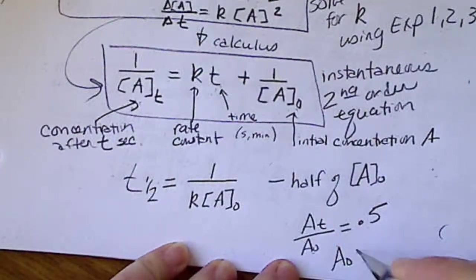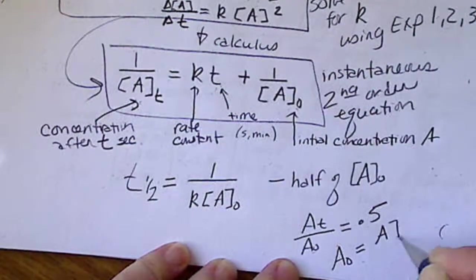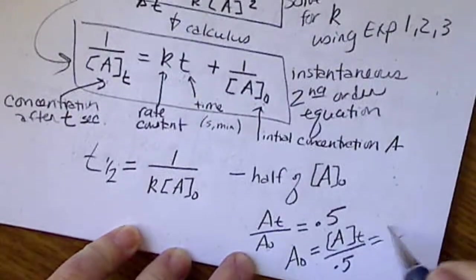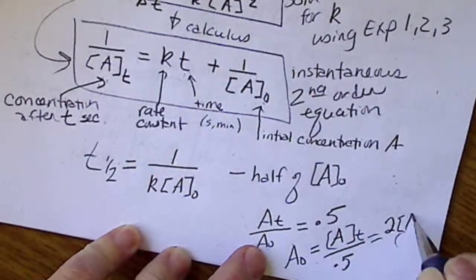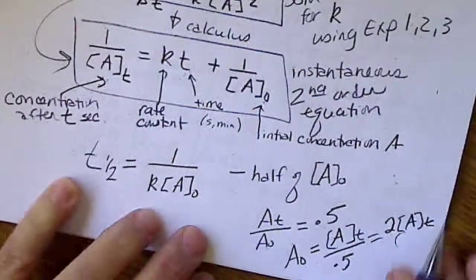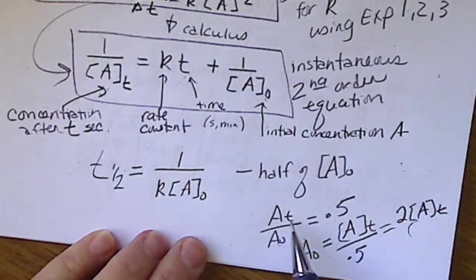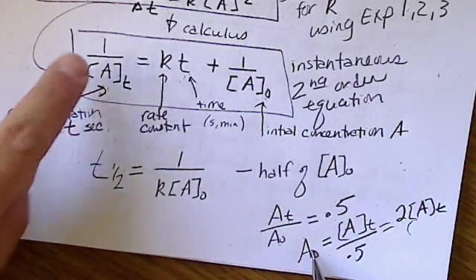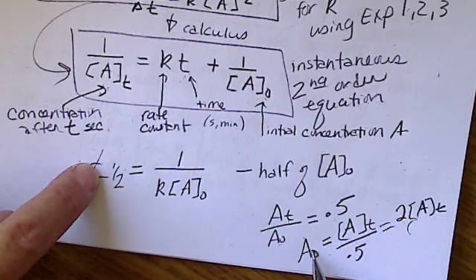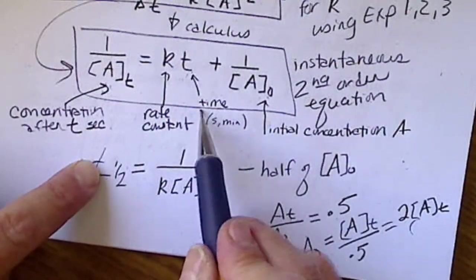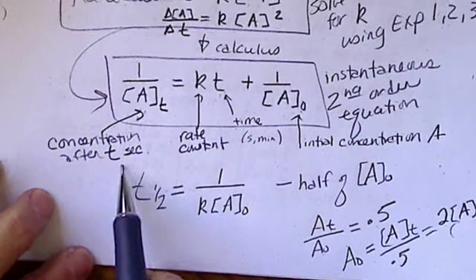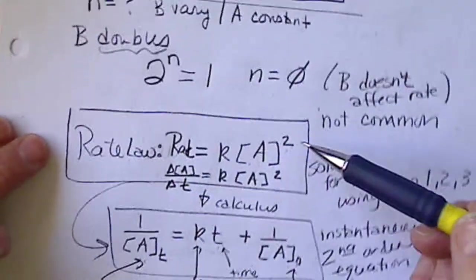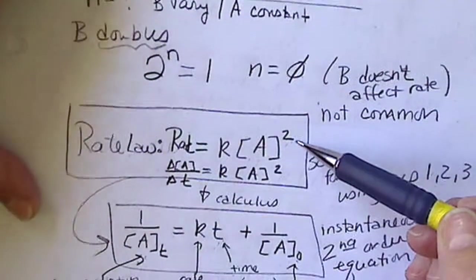So, if you substitute this in terms, let A to the zero equal A of T over 0.5, which turns into 2 times A of T. If we substitute one variable in terms of the other and plug all of that into here and solve for T, then we can take this equation and derive this equation. We don't need to know that, but we do need to know what a second order reaction rate law looks like.